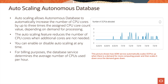Let us now look at the auto scaling functionality of autonomous database. Auto scaling allows autonomous database to automatically increase the number of CPU cores by up to three times the assigned CPU core count value, depending on demand for processing. The auto scaling feature also reduces the number of CPU cores when additional cores are not needed. You can enable or disable auto scaling at any time.